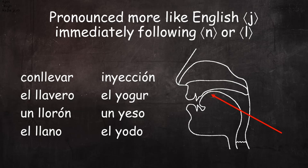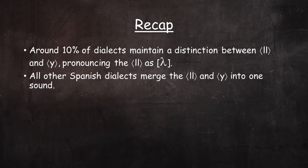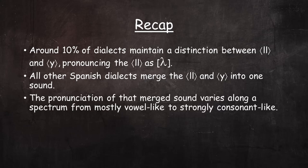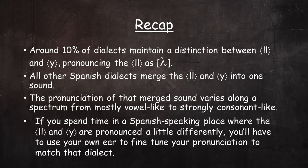This is a reasonably complete overview of the pronunciation of Spanish double L and Y. To recap: around 10% of dialects maintain a distinction between double L and Y, pronouncing double L as elie. All other Spanish dialects merge double L and Y into one sound, and the pronunciation of that merged sound varies along a spectrum from mostly vowel-like to strongly consonant-like. There are certainly dialects with pronunciations that lie somewhere in between the variations discussed here, so you'll have to use your own ear to fine-tune your pronunciation to match a given dialect.